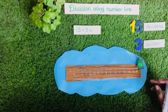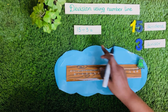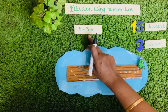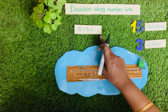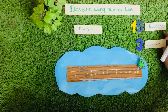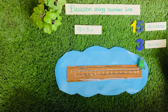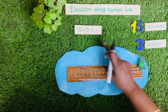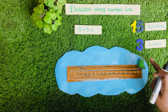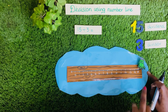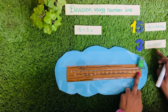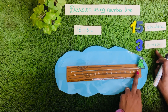Let's see another example. 15 divided by 3 is equal to what? So 15 is the dividend and 3 is the divisor. We need to find the quotient. The frog is on the number 15. So 3 is the divisor.